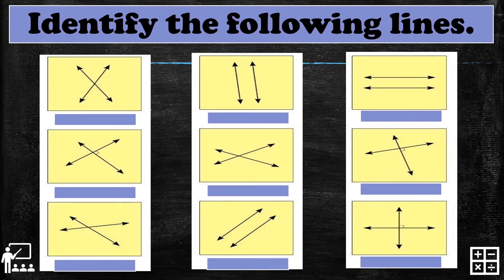Now we have an activity: identify the following lines. There are nine sample lines. You have 30 seconds to identify whether each line is parallel, intersecting, or perpendicular.